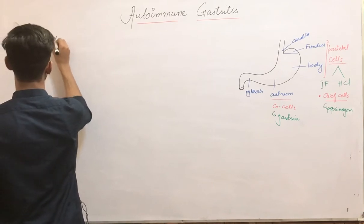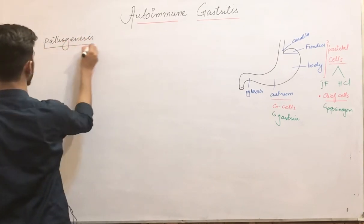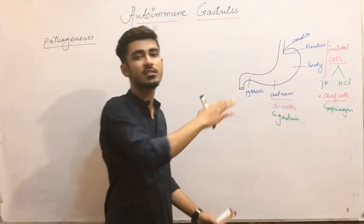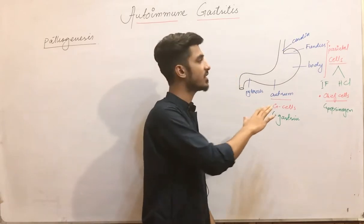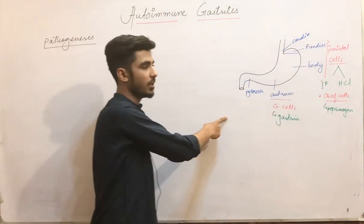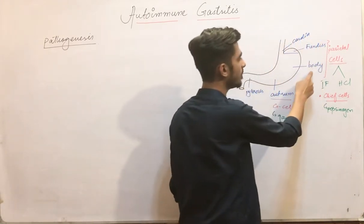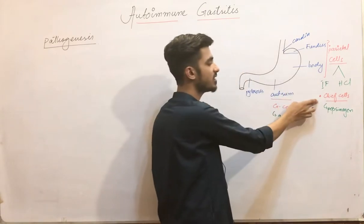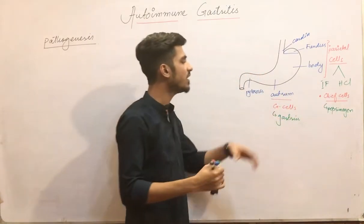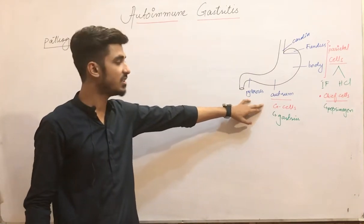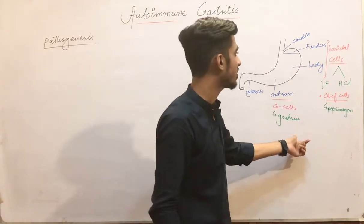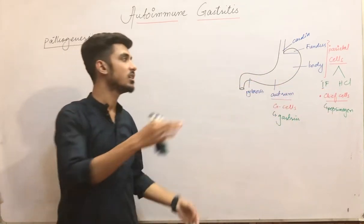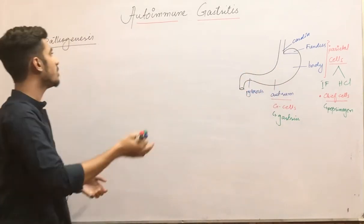Before discussing the pathogenesis, let me quickly revise the parts of the stomach and the cells involved. We have the cardia, the fundus, the body, the antrum, and H. pylori. The fundus and body contain parietal cells, which produce intrinsic factor and hydrochloric acid, and chief cells that produce pepsinogen. The antrum has G cells, which produce gastrin. Gastrin stimulates parietal cells to produce hydrochloric acid.